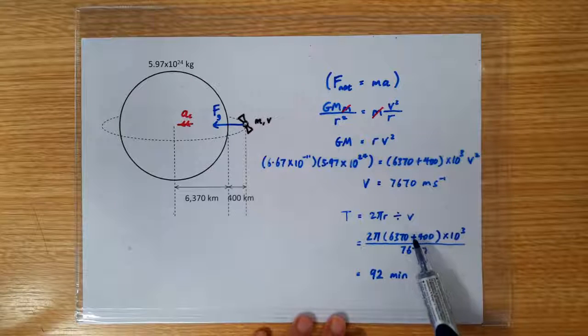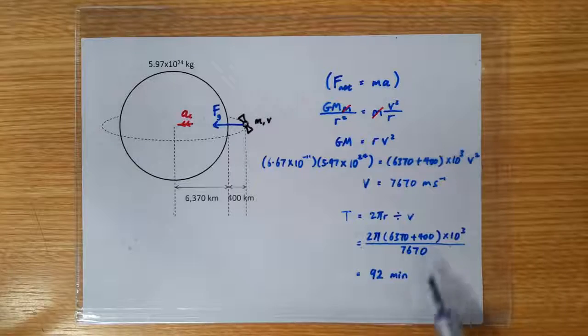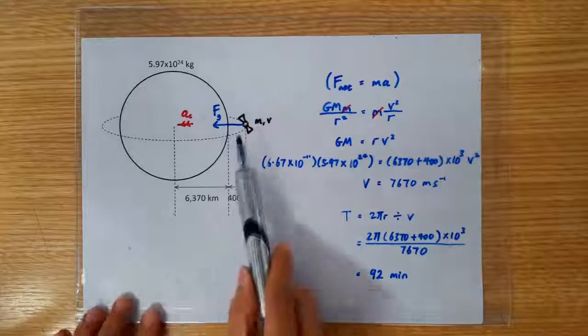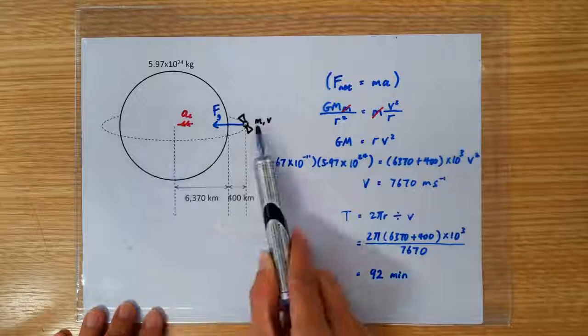Remember again that this is in kilometers, so we got to convert it to meters. Divide by the speed of the satellite, and it turns out it only takes about one and a half hours for the satellite to complete one revolution.